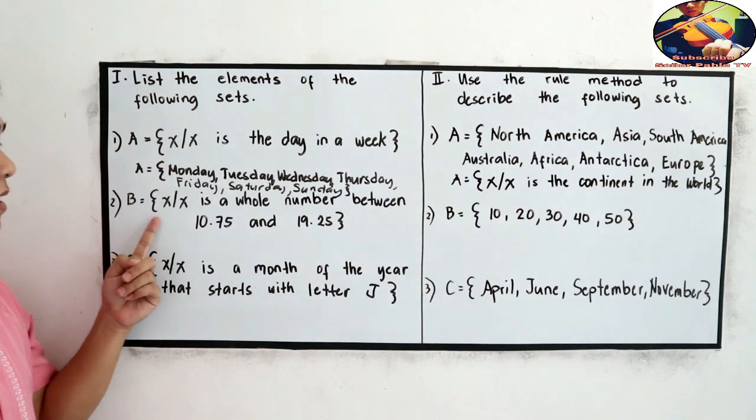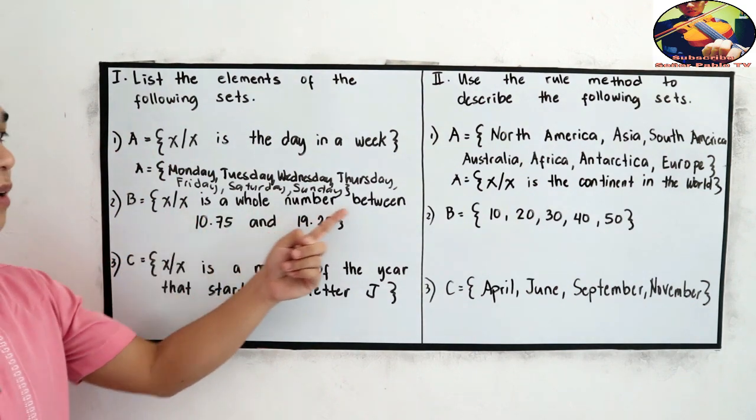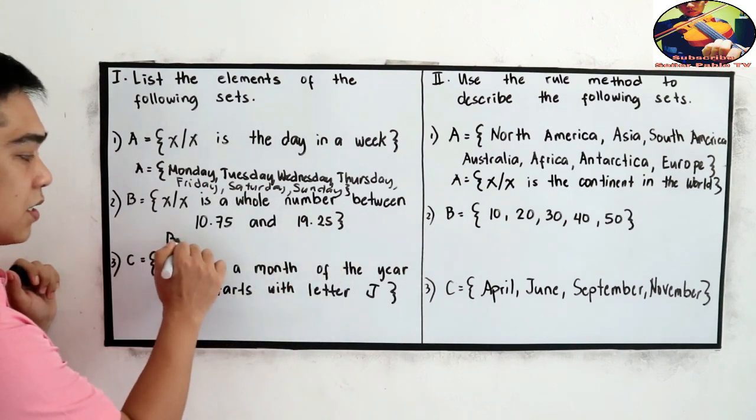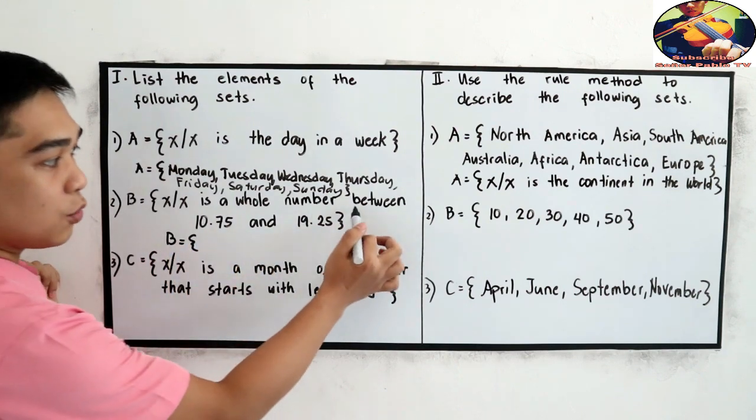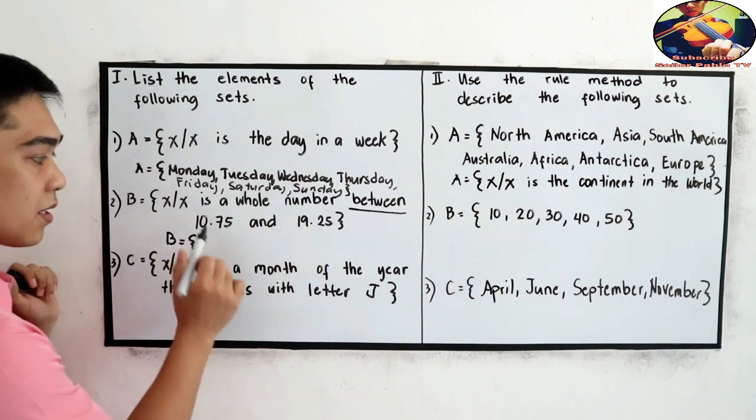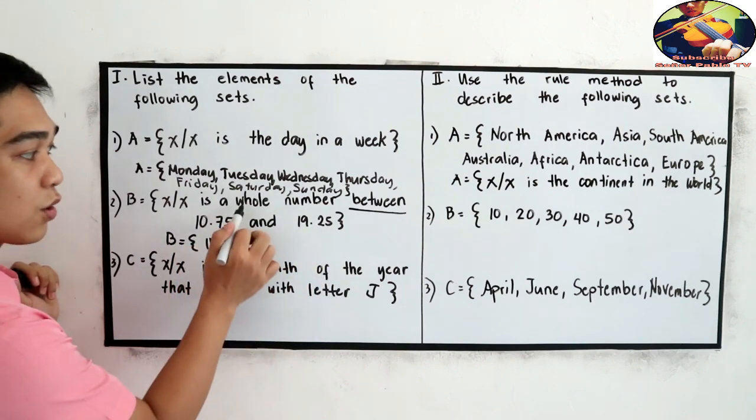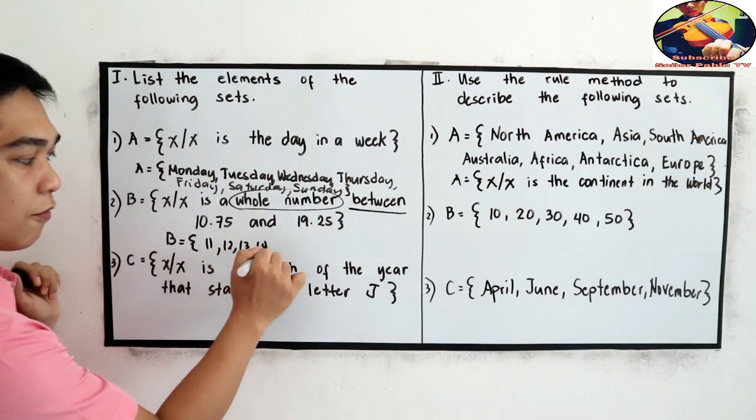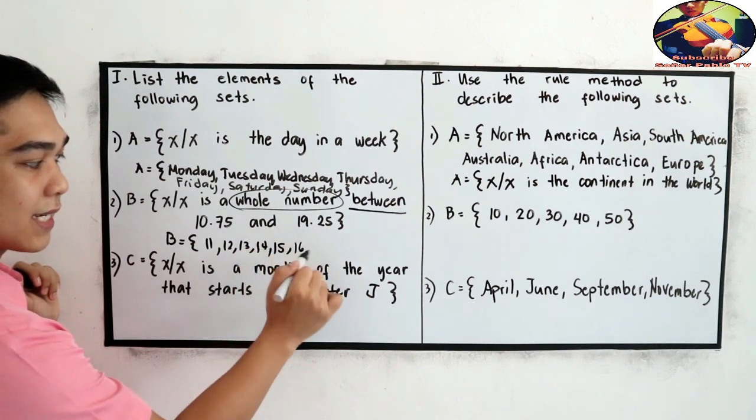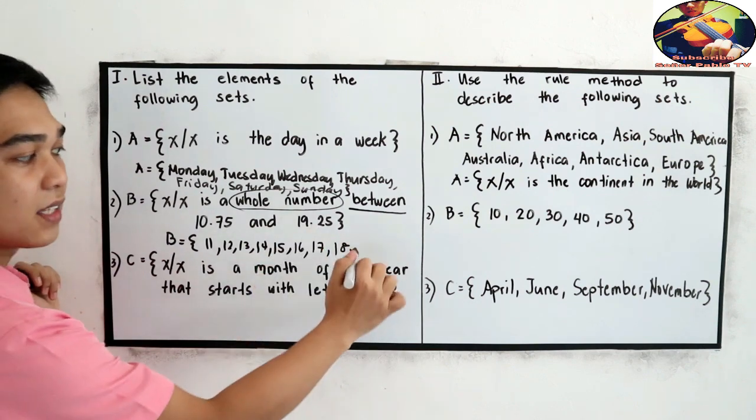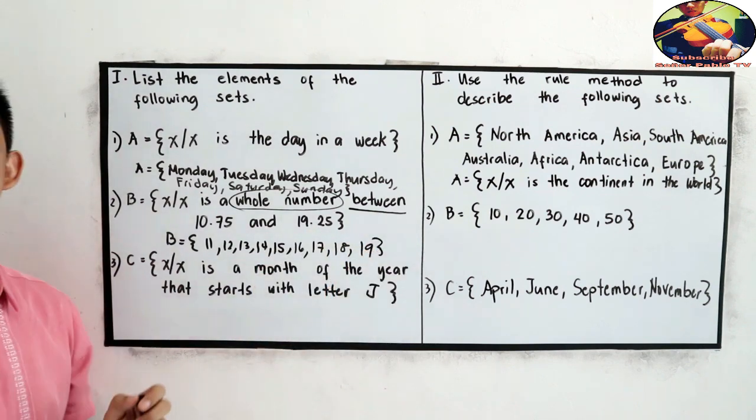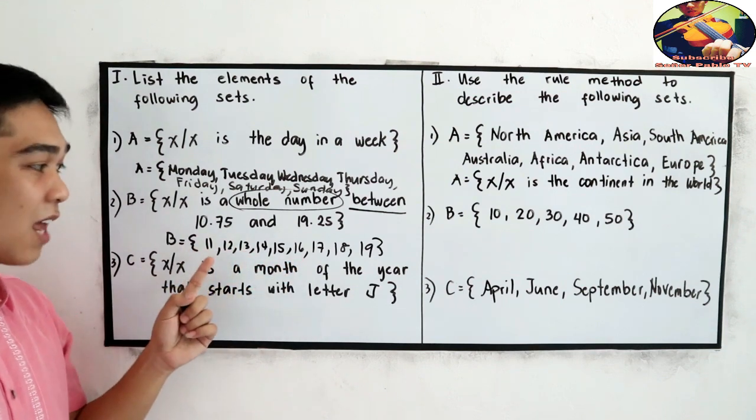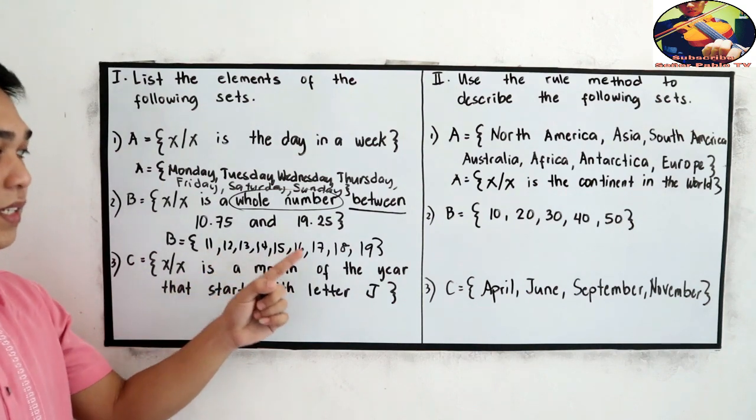Now let's check your work. For test 1, B is equal to x such that x is a whole number between 10.75 and 19.25. So B is equal to, take note between, so between those numbers are, we are talking about the whole number so 11 12 13 14 15 16 17 18 and 19. Those are the numbers in our set or our elements.